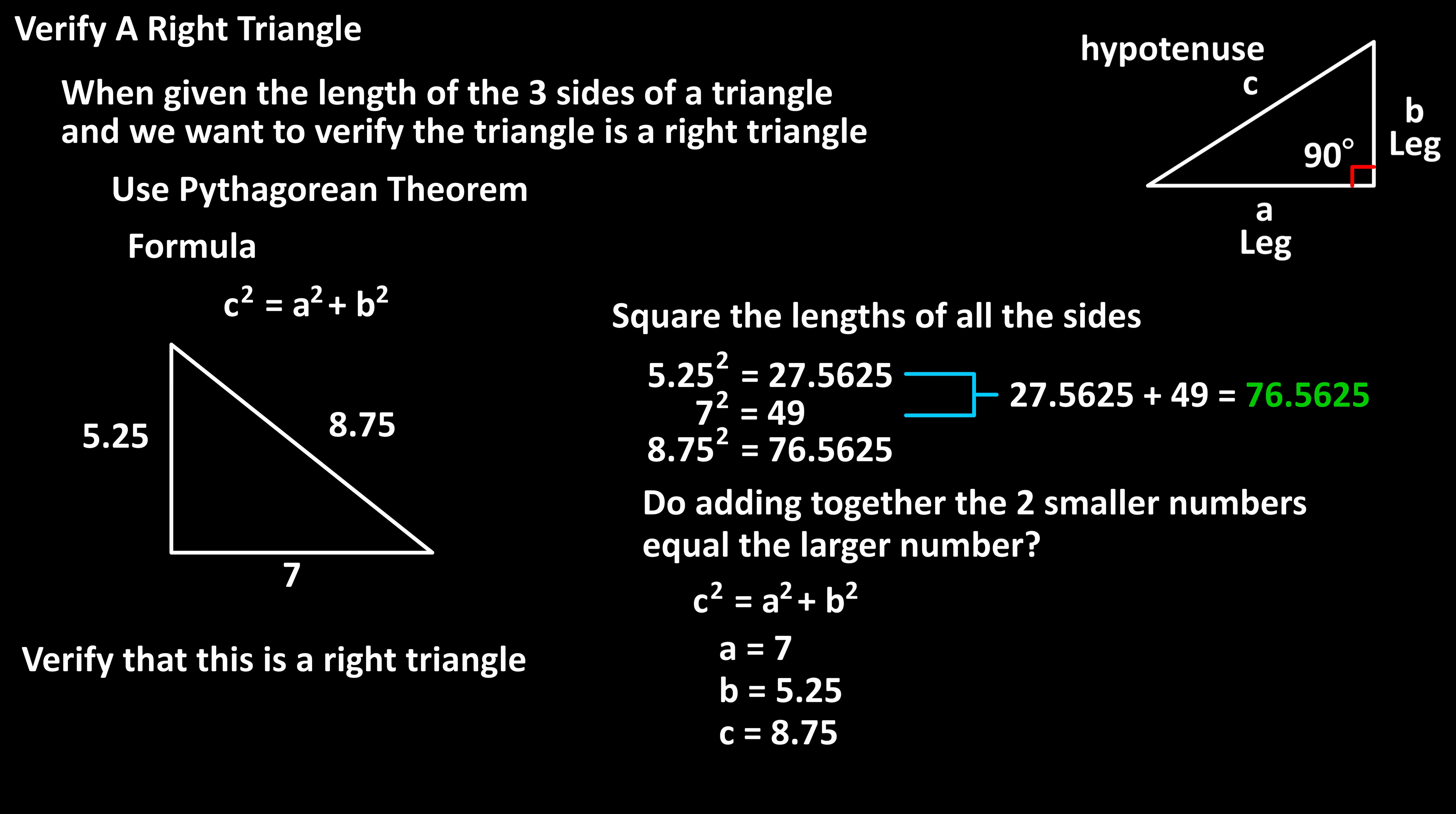So we can assign a to be 7, b to be 5.25, and c, the hypotenuse, to be 8.75. And indeed, we can verify that this triangle is a right triangle.